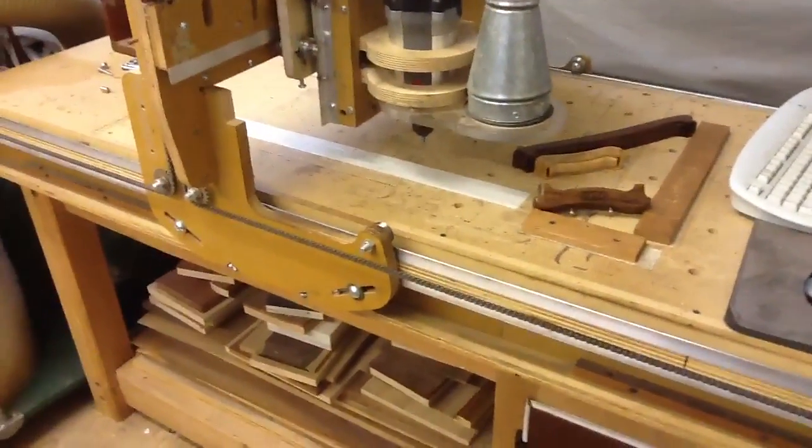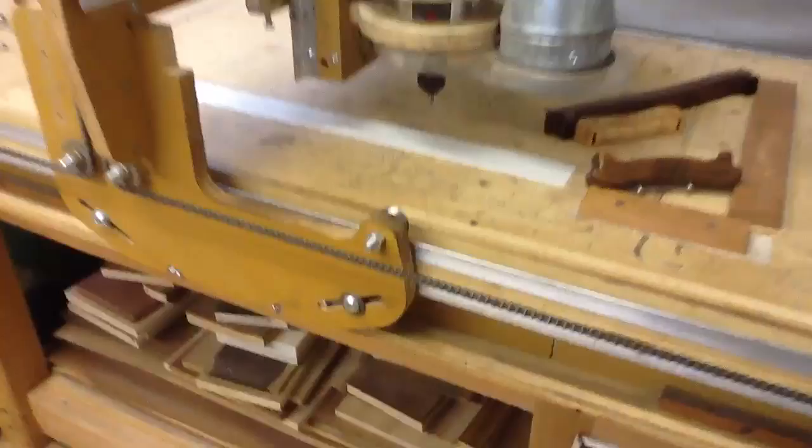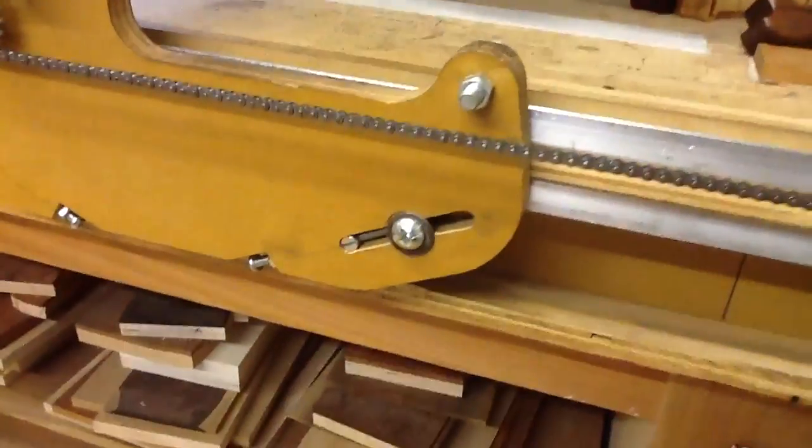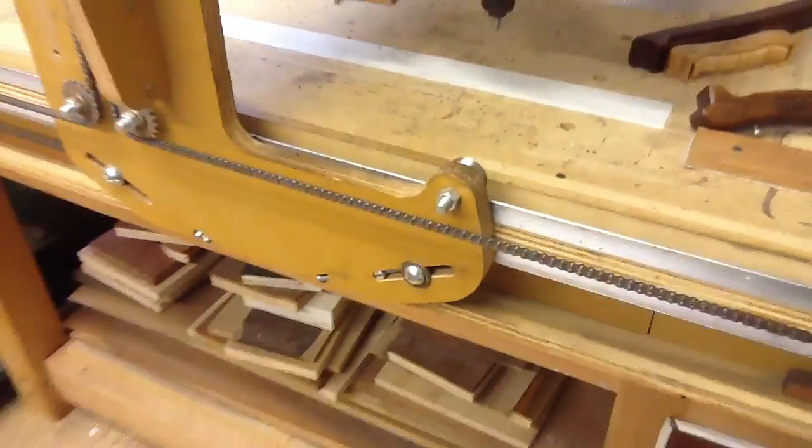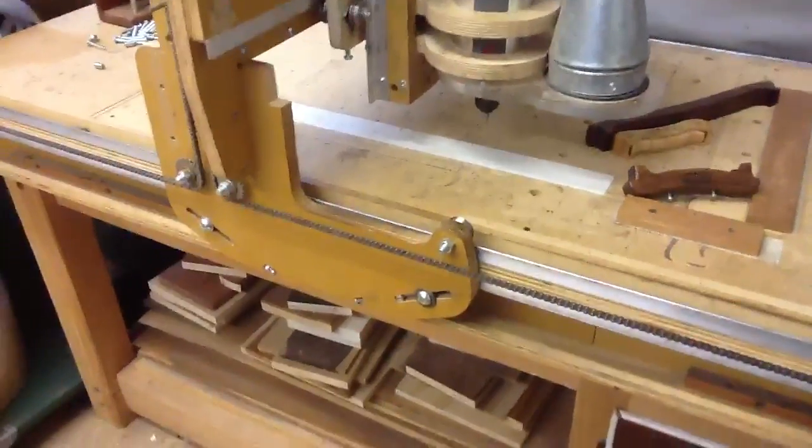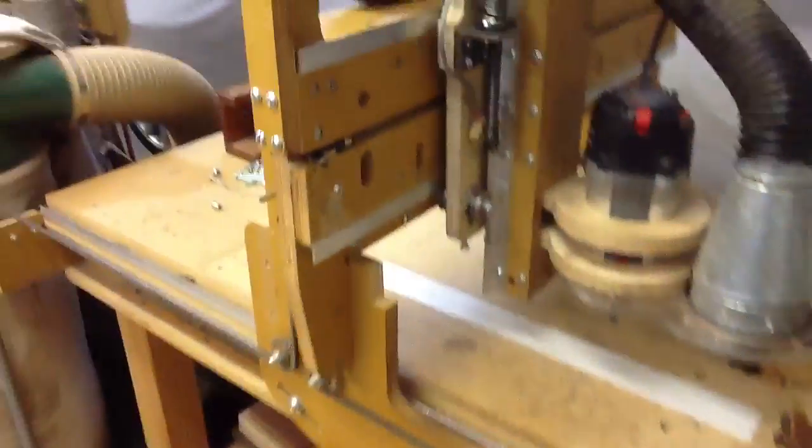As you can see down at the bottom of the picture here, I made the x-axis bearings adjustable. Instead of trying to wedge the bearing up and tighten it in one motion, I can hold them with a screw.